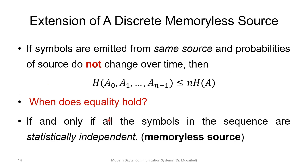Regarding extensions of discrete memoryless sources: if symbols are emitted from the same source and the properties of the source do not change over time, then the entropy of a sequence of n symbols is less than or equal to n times the entropy of an individual symbol. It becomes exactly equal when symbols are statistically independent — this is called a memoryless source, because each emitted symbol is independent of the previous ones.